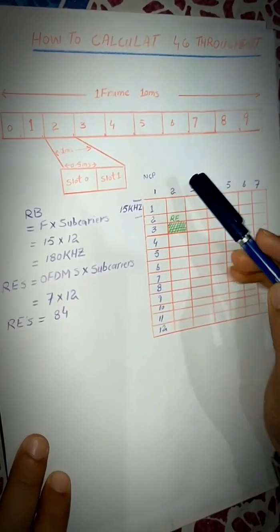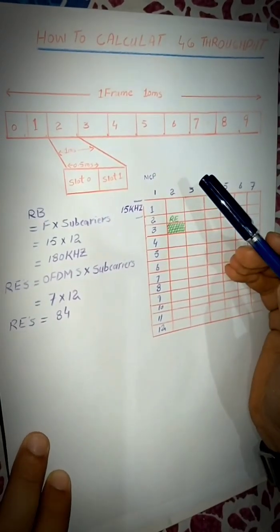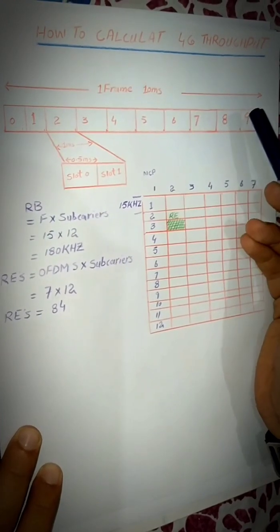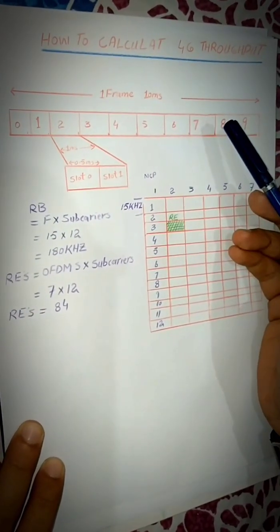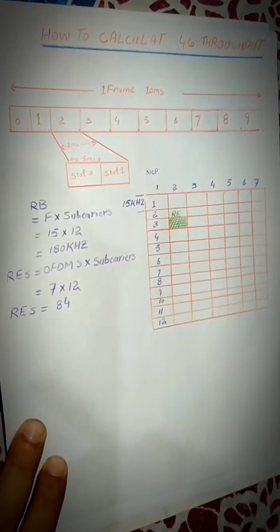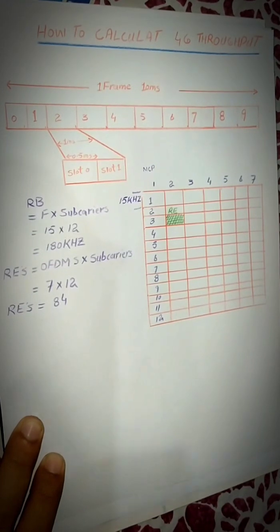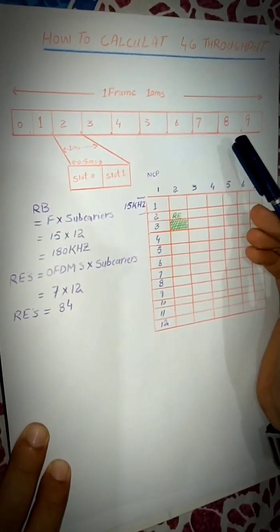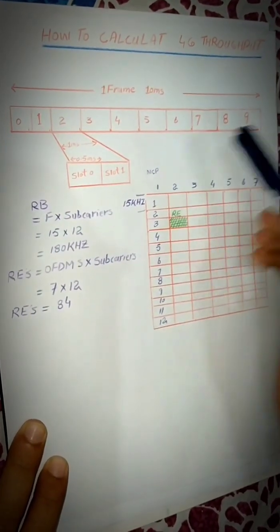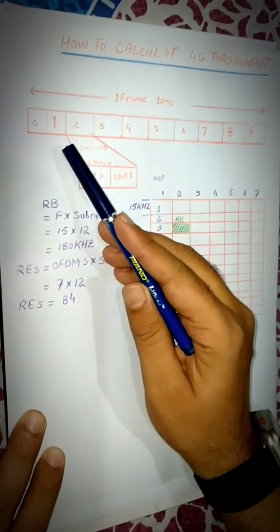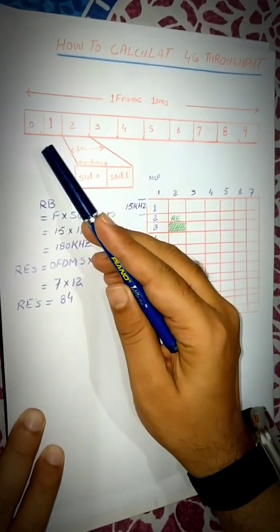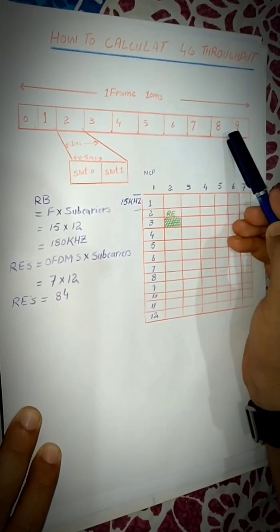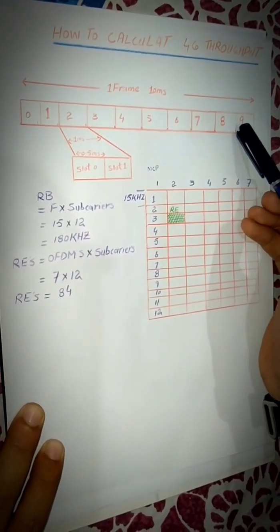Hello viewers, today we are going to calculate 4G throughput and 4G data rate. Before we start our topic, we need to understand the basic LTE frame structure. Here is the LTE frame structure: one frame contains 10 slots.